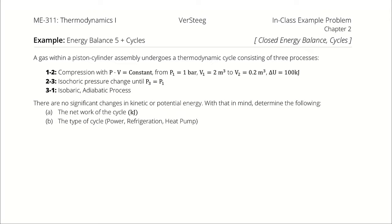A gas within a piston-cylinder assembly undergoes a thermodynamic cycle consisting of three processes. From 1 to 2, we have compression where pressure times volume is constant, from P1 and V1 to V2, with a described delta U. From 2 to 3, we have an isochoric pressure change until P3 equals P1. From 3 to 1, we have an isobaric adiabatic process. There are no significant changes in kinetic or potential energy. With that in mind, we are to determine the following.